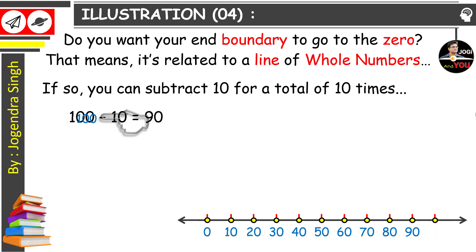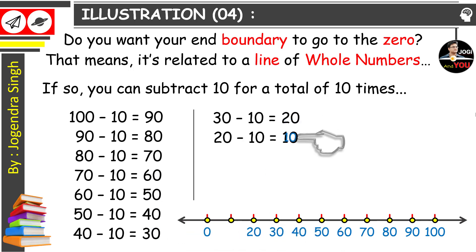100 minus 10 equals 90. Both are represented on the whole number line. 90 minus 10 equals 80. 80 minus 10 equals 70. And so on till you get the 0. If we count, it's a total of 10 times.